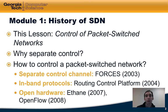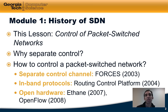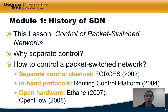I'll begin by reminding us why separating network control from the data plane is a good idea, and then we'll look at different ways that have been developed to control packet switch networks. We'll start by looking at the Forces Protocol, developed in the Internet Engineering Task Force, which defined a custom separate control channel to control switches or forwarding elements. Then we'll look at the Routing Control Platform, which used the Border Gateway Protocol to control routing decisions in a backbone network. Then we'll look at how the emergence of open hardware enabled more widespread adoption of separate control of packet switch networks.